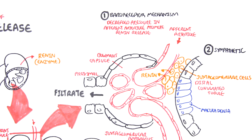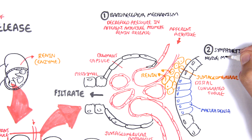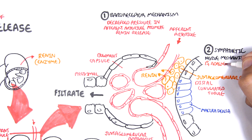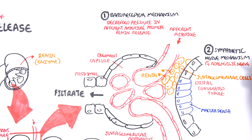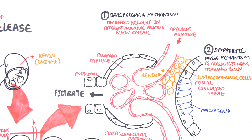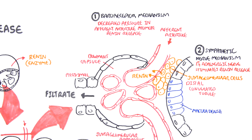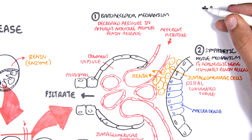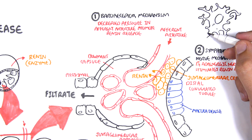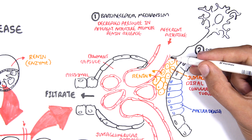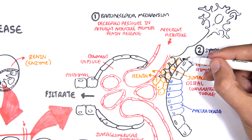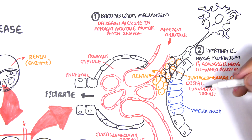The second mechanism is the sympathetic nerve mechanism. This involves sympathetic nerve fibers - beta-1 adrenergic nerves - that stimulate renin release. During periods of sympathetic activity, fight or flight, you usually have an increase in blood pressure and so you have renin release.